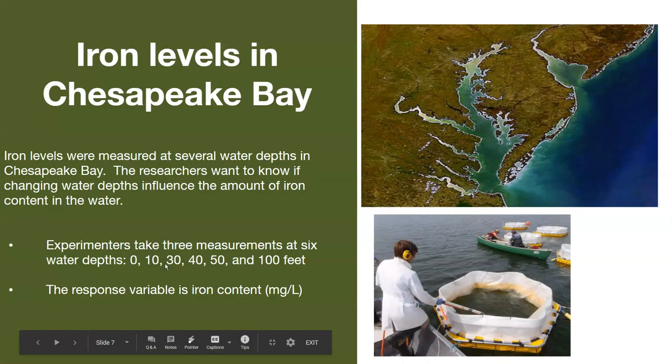The example we're going to look at is a data set of different iron levels in Chesapeake Bay. Chesapeake Bay is located in the eastern United States, not far from big cities like Washington, D.C. and Baltimore, and there have been a lot of environmental problems with the water quality in Chesapeake Bay.